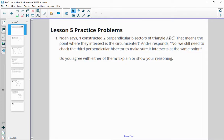In number one, Noah says, I constructed two perpendicular bisectors of triangle ABC. That means that the point where they intersect is the circumcenter. And Andre responds, no, we still need to check the third perpendicular bisector to make sure it intersects at the same point. Do you agree with either of them? Show or explain your reasoning.